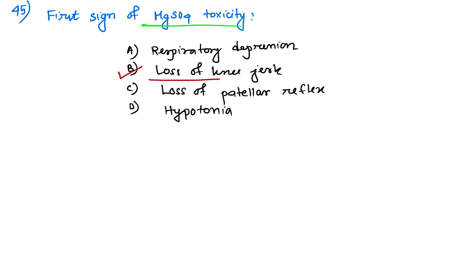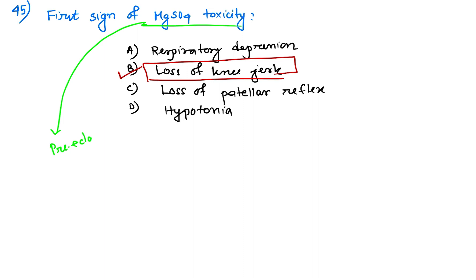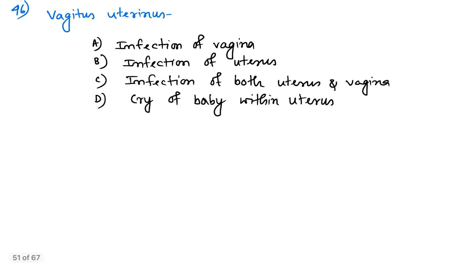Question number 45: what is the first sign of magnesium sulfate toxicity? The first sign is loss of knee jerk. Magnesium sulfate is used for the obstetric management of pregnancy-induced hypertension, preeclampsia, and eclampsia — using the Pritchard regimen. So the first sign of magnesium sulfate toxicity is loss of knee jerk.